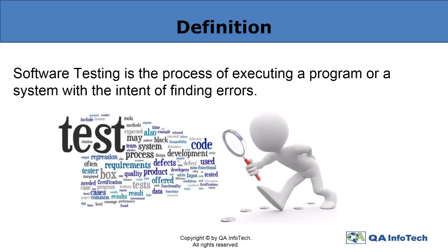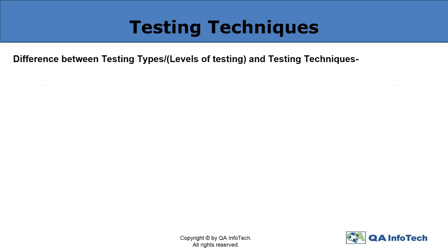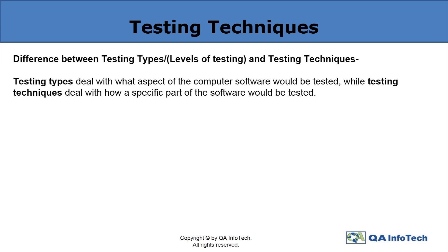Software testing essentially involves any activity aimed at evaluating an attribute or capability of a program or a system and determining that it meets its required results. Thus, the types and techniques involved under software testing mainly differ on the basis of what aspect of a computer software would be tested and how a specific part of the software would be tested respectively.